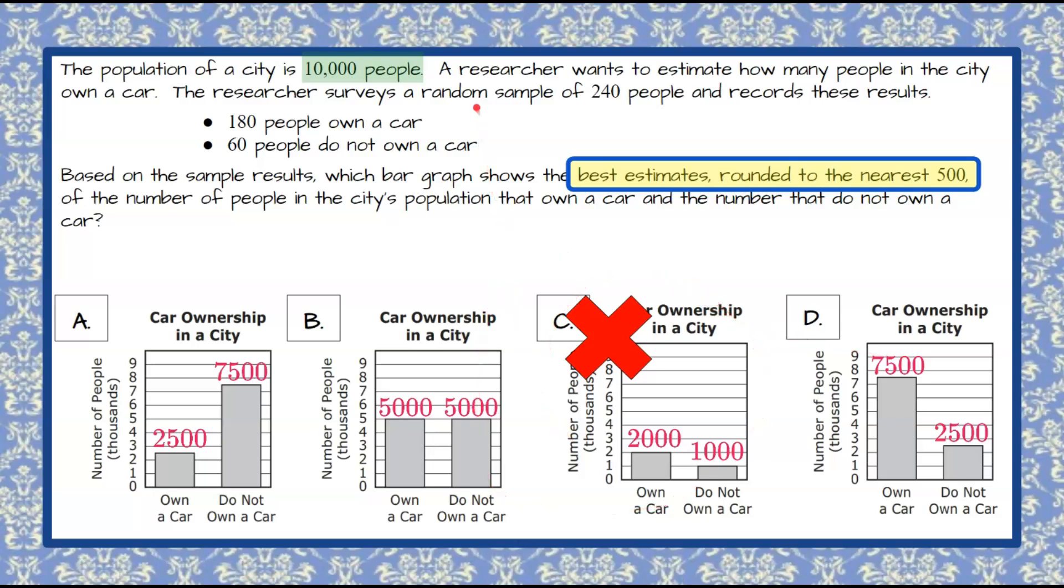Now let's go back and see that our researcher took a random survey of 240 people. That was a random sample. Of the 240 people, 180 people owned a car and 60 people did not own a car. So if we take our first data item which is 180 people out of the 240, we can use this to predict how many own a car out of 10,000.